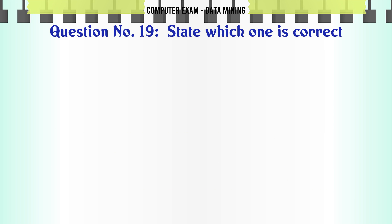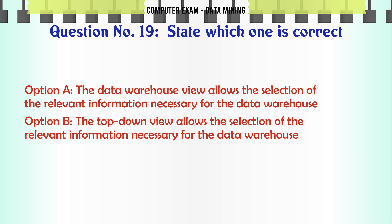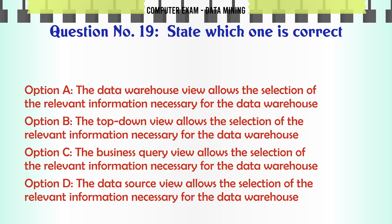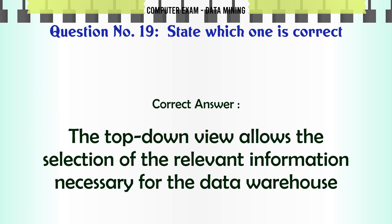State which one is correct: A. The data warehouse view allows the selection of the relevant information necessary for the data warehouse. B. The top-down view allows the selection of the relevant information necessary for the data warehouse. C. The business query view allows the selection of the relevant information necessary for the data warehouse. D. The data source view allows the selection of the relevant information necessary for the data warehouse. The correct answer is: The top-down view allows the selection of the relevant information necessary for the data warehouse.